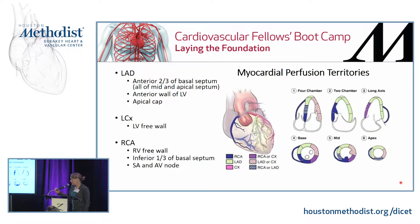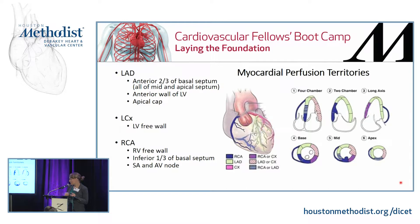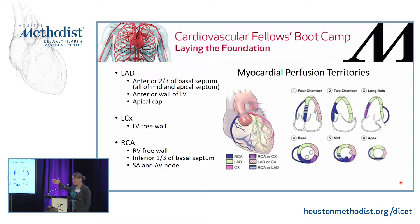On perfusion territories, the picture on the right is the standard ASE guideline image showing where you're supposed to look on a transthoracic echo. You can see the four-chamber, two-chamber, and long axis views, all oriented for transthoracic echo. You can just invert the image to see where those perfusion territories would be for a transesophageal echo.